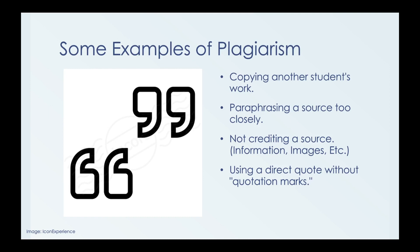Another example is paraphrasing a source too closely. When you are quoting information, especially from a book or online, a lot of people just take what is said and change some words around a little bit. But you actually want to directly put it in your own words, or even cite that you got this information from said book or website.